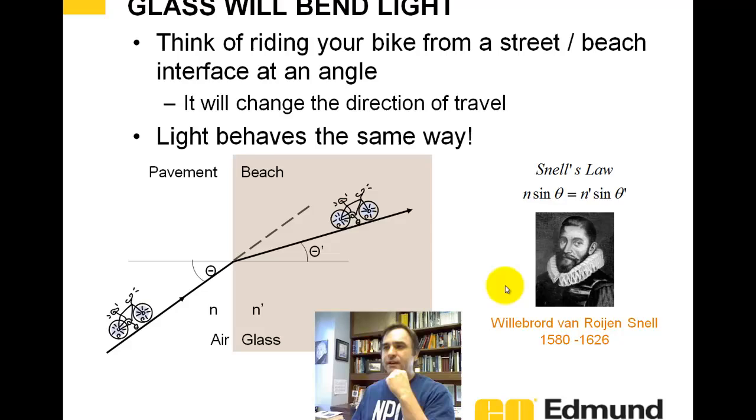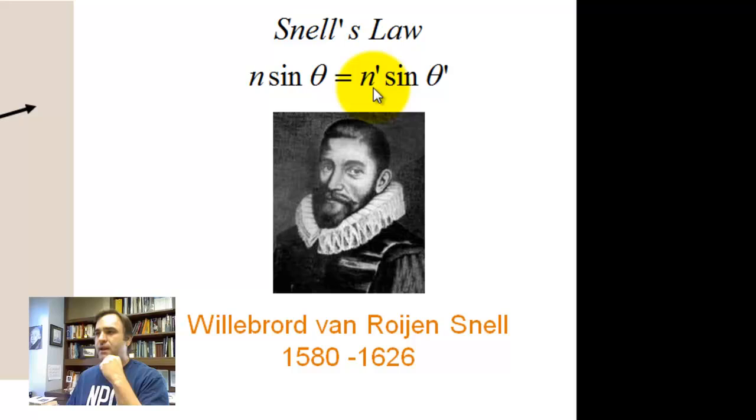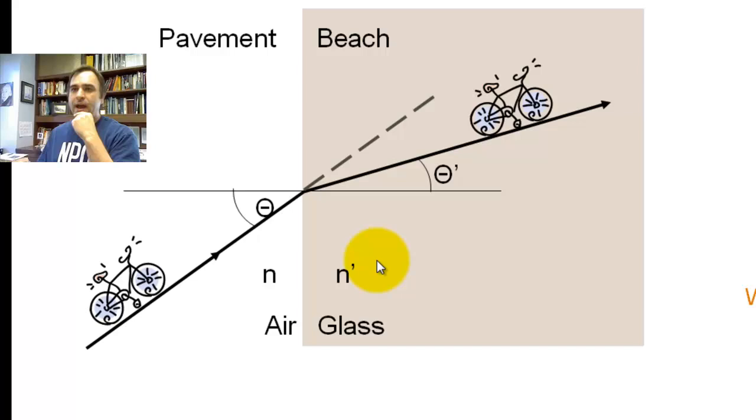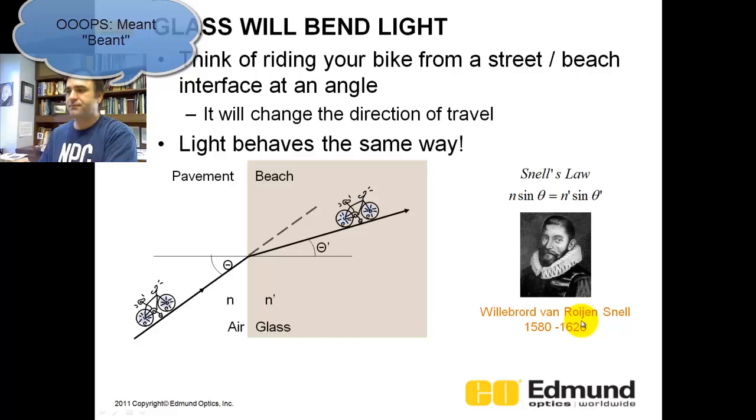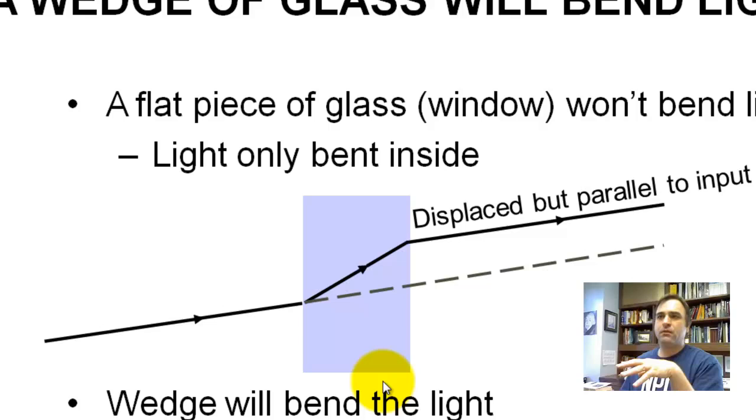So how is light bent? It's characterized by Snell's law. It's this equation: N sine theta equals N prime sine theta prime. Unprimed is in air, primed is in glass. So the analogy, back to the analogy of riding your bike. You're riding your bike on pavement. Now, if you ride your bike perpendicular to the pavement-beach interface, you're not going to change any direction. If you ride your bike at an angle, your right side of the bike is going to enter first, and it's going to pull the bike to the right. And that's what is happening with a photon. That is why light is slowed down.